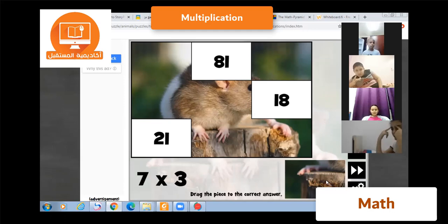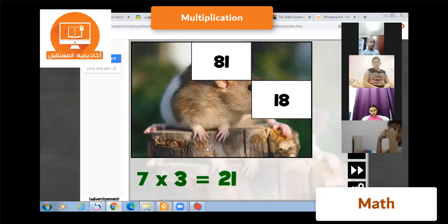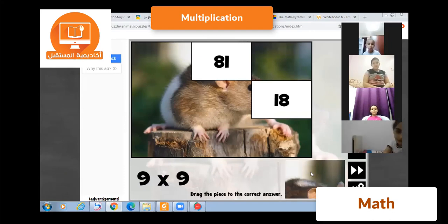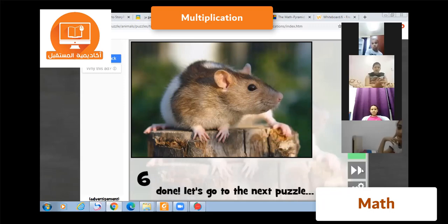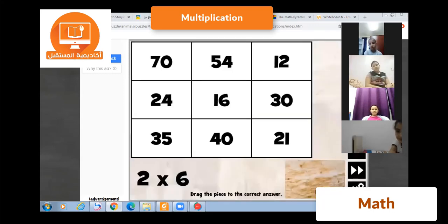Bravo! حقر, nine times nine equals eighty-one. Bravo! علي, six times three equals eighteen. Eighteen, Bravo! جودي, two times six equals...